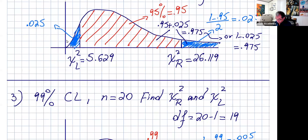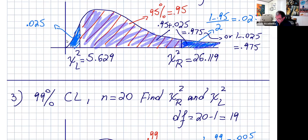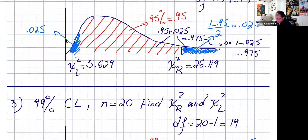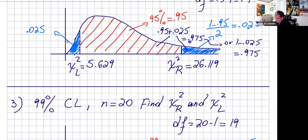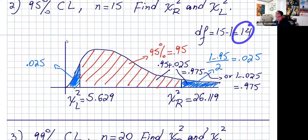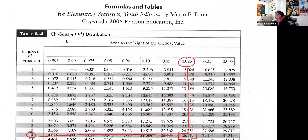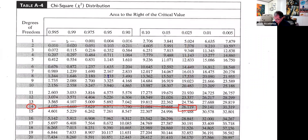If I want chi-squared from the left, one more time I need to know the area to the left of that number. The area to the left is this red area plus the little area: 0.95 plus 0.025 is 0.975. So 0.975, degrees of freedom 14. Let's go to the table — 14 is right here, 0.975 is right here.